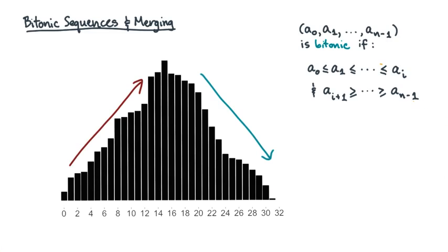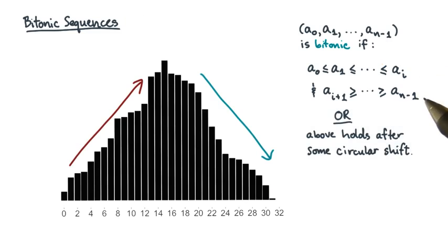Now that's not the complete definition of bitonic. There's one more condition. If this up and down property holds not for the original sequence, but it does hold for some circular shift of the sequence, then the sequence is still bitonic.